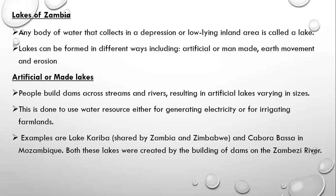Examples of artificial lakes include Lake Kariba, shared by Zambia and Zimbabwe, and Cahora Bassa in Mozambique. Both these lakes are created by the building of dams on the Zambezi River.